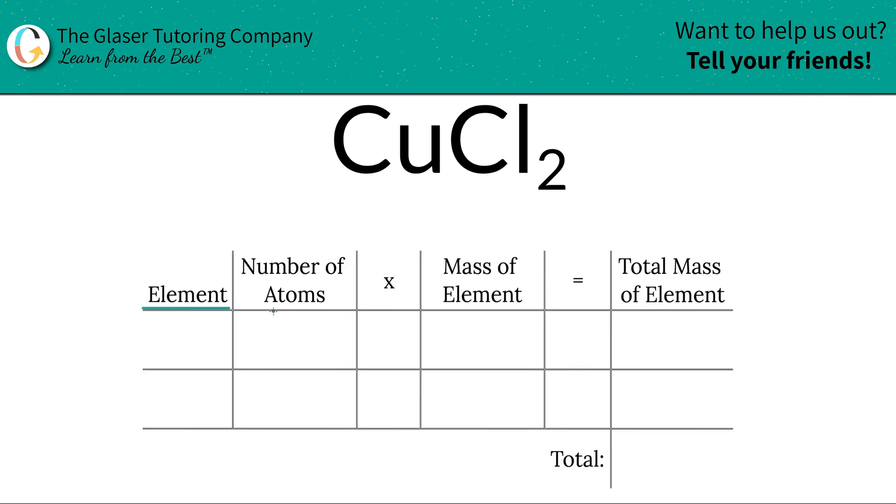Bam. So the first step is to write down the elements I see in the compound, right? So we see copper, Cu, and we see chlorine, Cl.